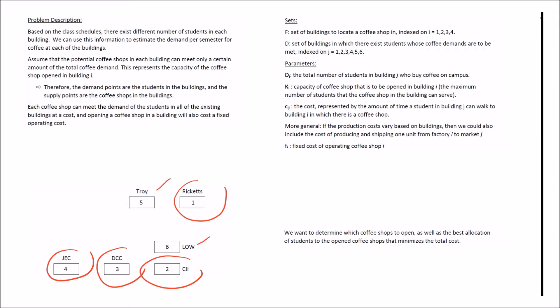There are some restrictions: each coffee shop has a capacity which is the maximum number of students it can serve, and all opened coffee shops can be allocated to any of these buildings. However, we are going to pay some amount of money for the allocation decision, and also a fixed operating cost upon opening a coffee shop. In terms of the data, we have two sets: the set of buildings to locate a coffee shop in, indexed on I from 1 to 4, and the set of buildings with students whose coffee demands are to be met, indexed on J from 1 to 6.